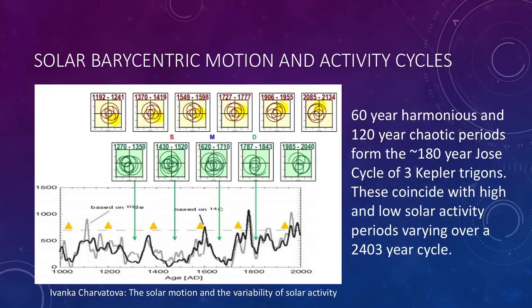Now Ivanka Charvatova back in the 80s, following on from the work of Paul de Jose who discovered a sort of 179 year return period for the motion of the major planets, it's not exact but it's a cycle that's evident. She found that for about 60 out of the 180 years you got a nice regular motion of the sun around the barycenter of the whole solar system. It sort of makes like a three leaf clover shape.